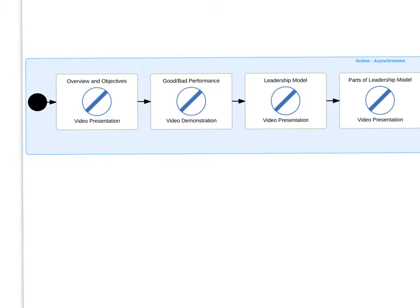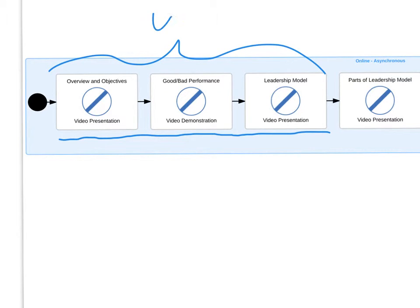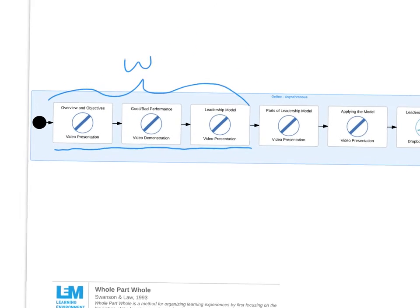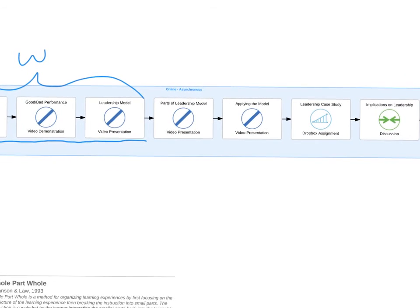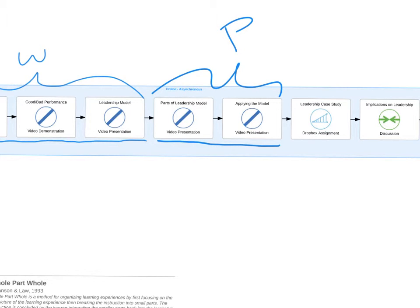The Whole Part Whole is a series of cues for how instruction is focused. The beginning is focused on the whole: an overview of the objectives, a high-level overview of good and bad performance, and a leadership model. This is the first whole of the model. It then breaks down into a focusing area, moving into the specific — the parts of the leadership model — all done through video demonstration.